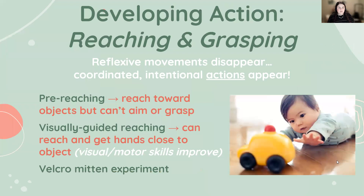This leads us to developing action — specifically reaching and grasping. As early involuntary reflexes disappear, coordinated intentional actions appear. One of the first is reaching and grasping. We can think of it in segments. First, we have pre-reaching — very young infants reach toward objects with clear intention, but can't accurately aim or grasp due to lack of coordination. Research has shown that if large, colorful objects move slowly past an infant, very young infants will reach toward them, demonstrating pre-reaching.